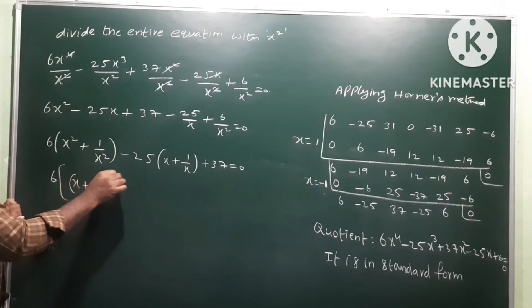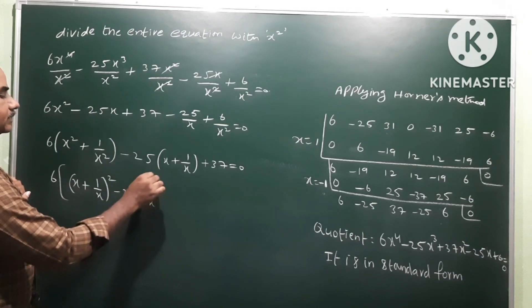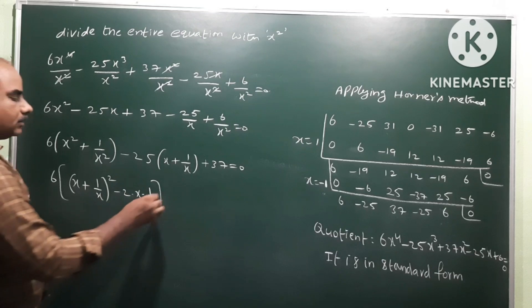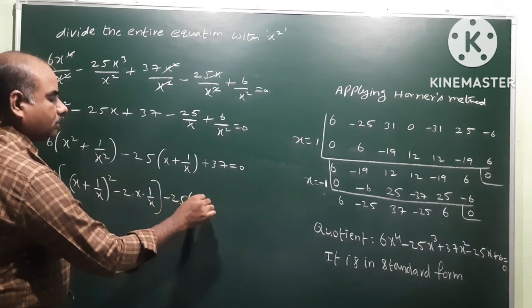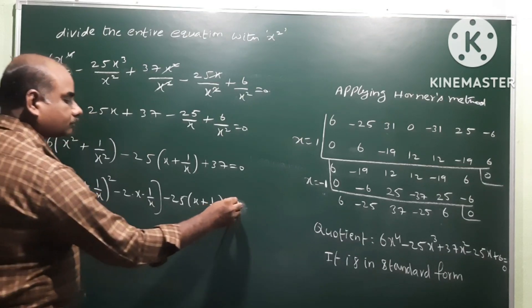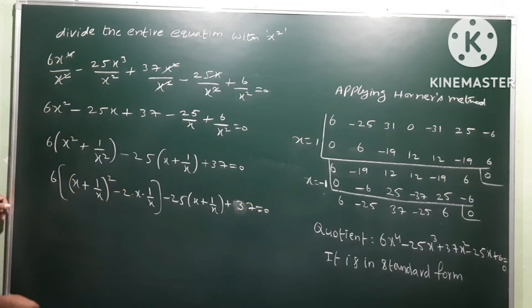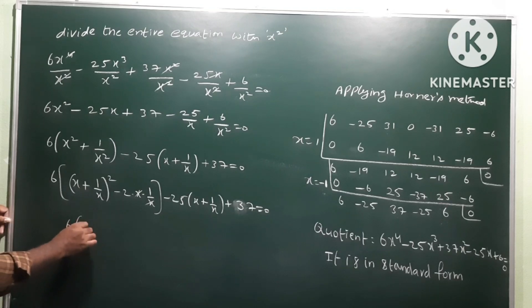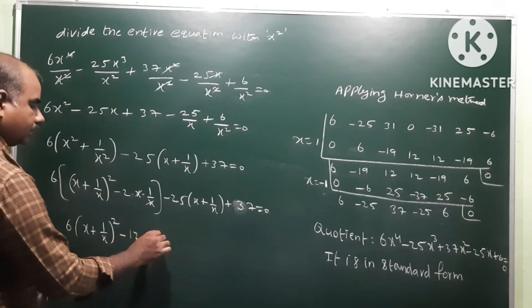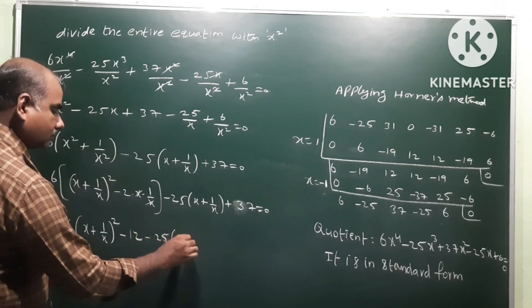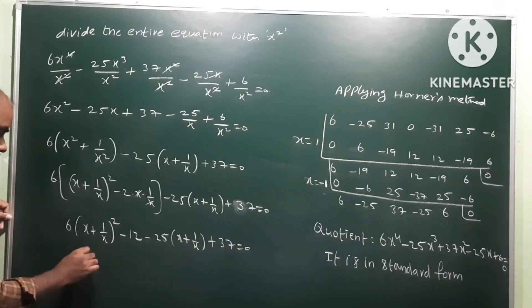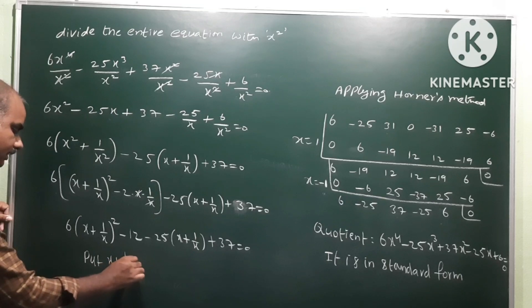Now, x² + 1/x² = (x + 1/x)² - 2. Let t = x + 1/x. So x² + 1/x² = t² - 2. Substituting: 6(t² - 2) - 25t + 37 = 0.